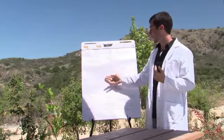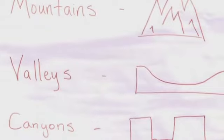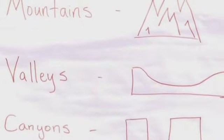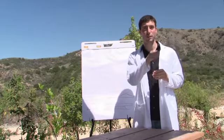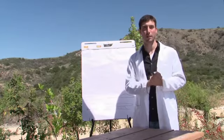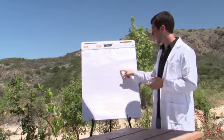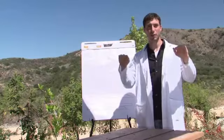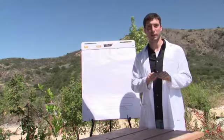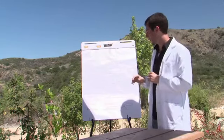Another common one is valleys. Valleys usually occur between two mountains — they're areas that are kind of depressions, lower than the surrounding land. You can have a U-shaped valley or a V-shaped valley, but valleys are low-lying areas between two higher areas.